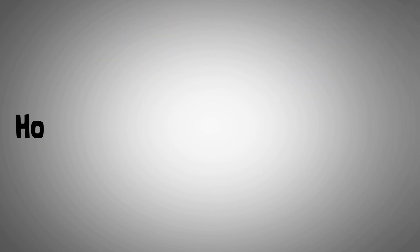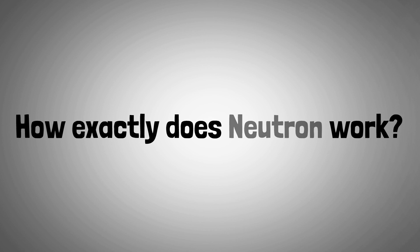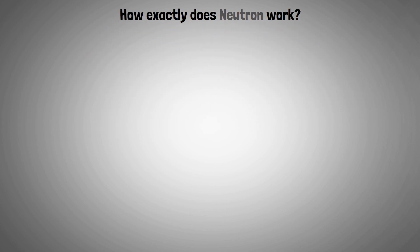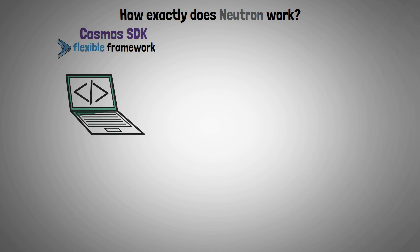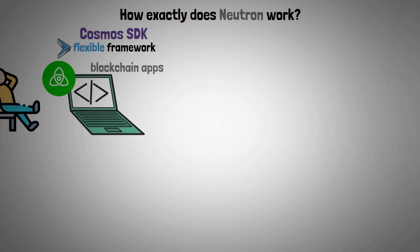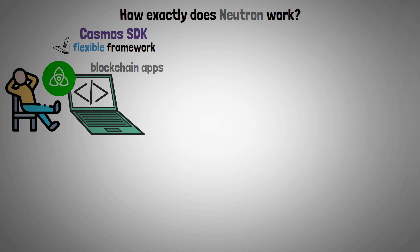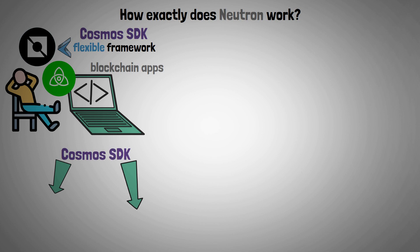Now let's describe how exactly Neutron works. The Cosmos SDK, a flexible framework that makes developing safe blockchain apps on Tendermint BFT easier, is used in the construction of Neutron. Two fundamental tenets of the Cosmos SDK are capability-based security and modularity.